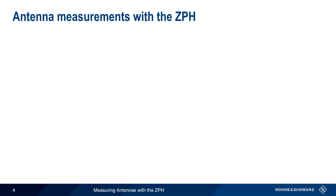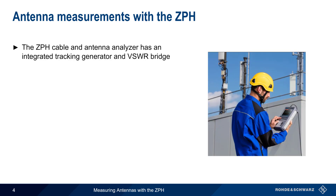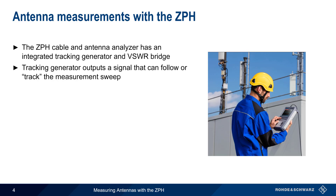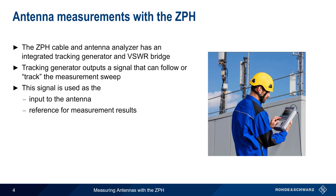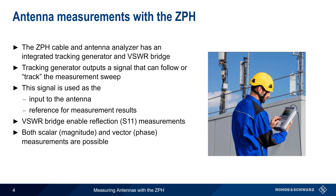The Rohde & Schwarz ZPH cable and antenna analyzer contains both an integrated tracking generator as well as an internal VSWR bridge. The tracking generator is an RF signal source whose frequency can follow or track the measurement sweep. This signal is used both as the input to the antenna as well as the reference for the measurement results. The integrated VSWR bridge enables the ZPH to make reflection measurements on antennas by separating the forward and reverse power. Both scalar or magnitude measurements and vector or phase measurements can be made with the ZPH, and measurement results can be displayed in a variety of formats.